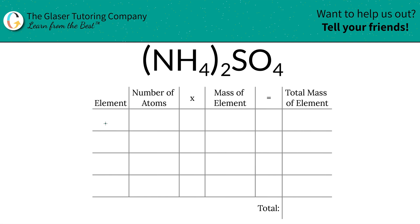So the first step of the process is that we're going to write down the elements we see in the compound. So we've got nitrogen, hydrogen, sulfur, and oxygen. Then we got to identify the number of atoms of each, and that's where the subscripts come into play.